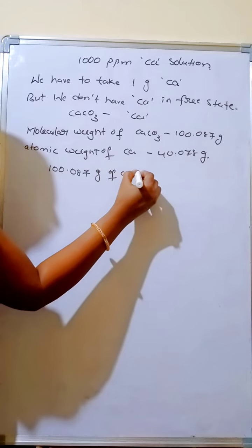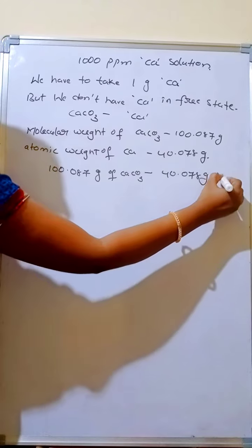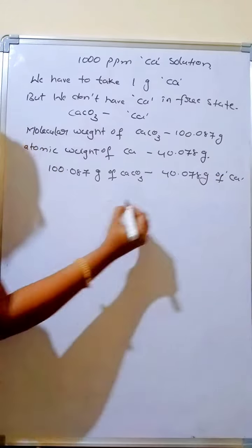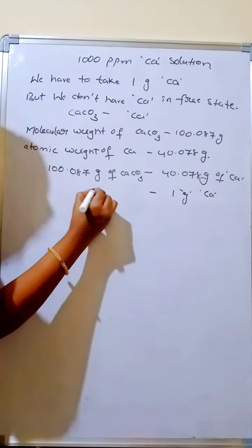So 100.087 grams of calcium carbonate contain 40.078 grams of calcium. Now 1 gram of calcium we have to take, so how much calcium carbonate we have to take? That we have to calculate.